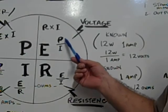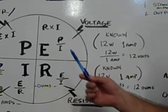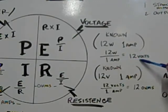So you divide wattage by amperage. This is 12 watts divided by 1 amp equals 12 volts.